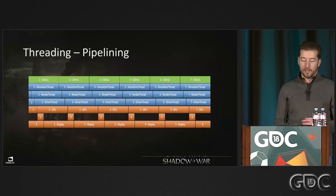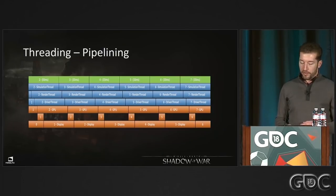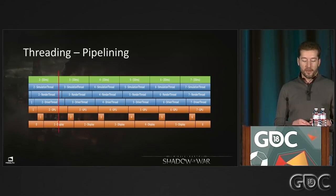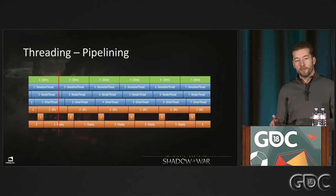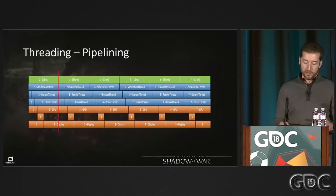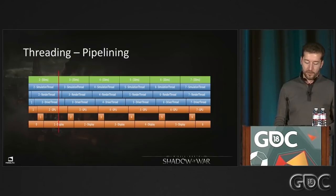This best-case scenario shows each stage executing just a couple milliseconds after the previous one. The red line illustrates the problem if we instead spawned and joined inline — the render thread wouldn't get its full 33ms, nor would the driver thread. This only applies to CPU workload (the blue rows), since the GPU timing is outside our control.